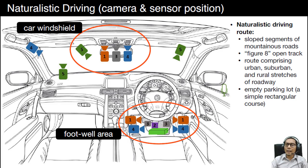Or even at an empty parking lot on a simple rectangular course. This figure shows the location of cameras and sensors placed in the car cabin to study the pedal error using the naturalistic driving. Most of the researchers placed the camera on the car windshield and at the footwell area, which aims to capture the driver's upper body, face, foot, and looking forward.